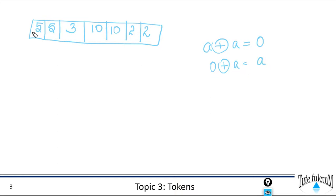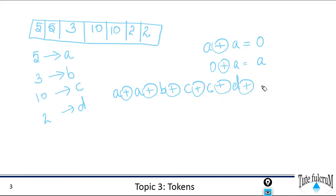So if you look at these elements, suppose if you represent 5 as A, 3 as B and say 10 as C and 2 as D. Can we write an expression like A XOR A XOR B XOR C XOR C XOR D XOR D.